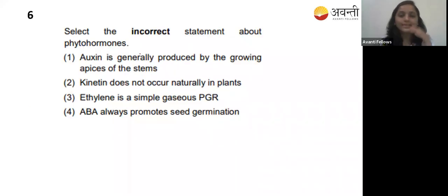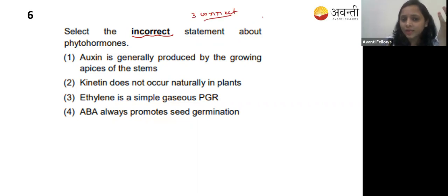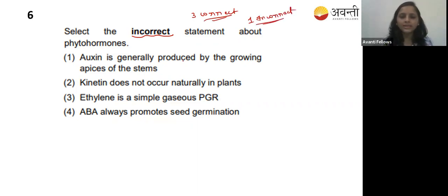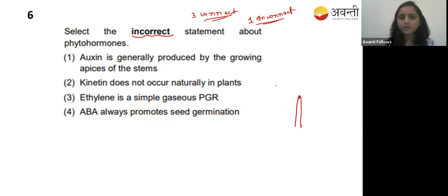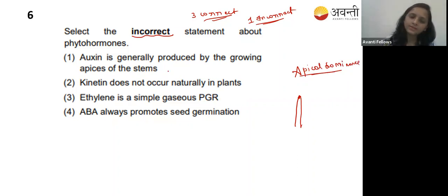Sixth question: select the incorrect statement about phytohormones. Option one - auxin is generally produced by growing apices of the stem. Yes, auxin is higher at the growing apices, which is why it causes apical dominance. That is correct. Option two - kinetin does not occur naturally in the plant. Yes, that is also correct.